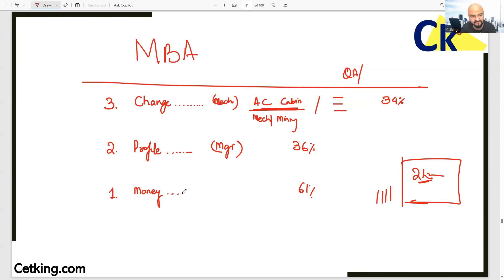Let's talk about Band B colleges where the average package is 18, 19, 20 lakhs.